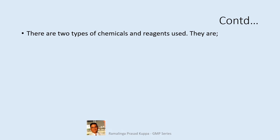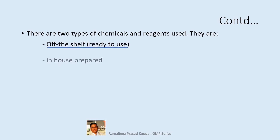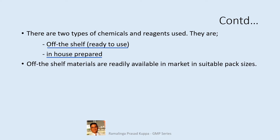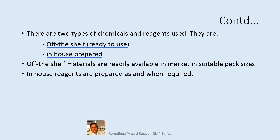There are 2 types of chemicals and reagents used: off-the-shelf, that is ready to use, and in-house prepared. We have both these types of reagents used in the laboratory — outsourced and in-house. Off-the-shelf materials are readily available in the market in suitable pack sizes; you may procure any suitable size depending upon the usage pattern. In-house reagents are prepared as and when required. Freshly prepared means validity for usage of the reagent is within 24 hours after preparation. Other reagents like volumetric solutions are also prepared in-house.